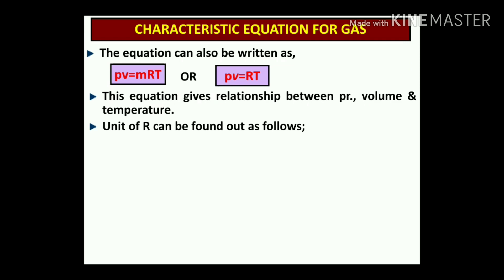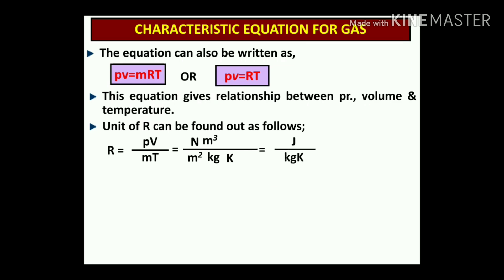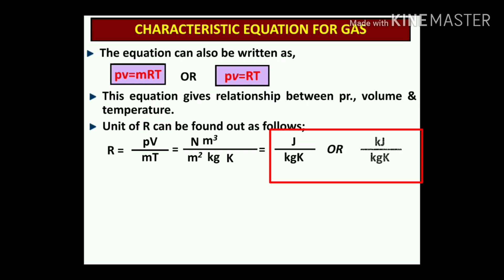The unit of R can be derived as follows: R = PV / (m × T). With pressure in newtons per meter squared, volume in meter cubed, mass in kg, and temperature in Kelvin, the unit of R finally works out to joules per kg·Kelvin, or kilojoules per kg·Kelvin.